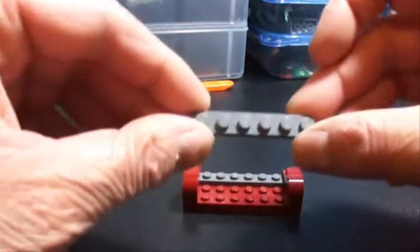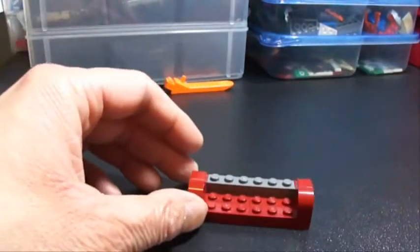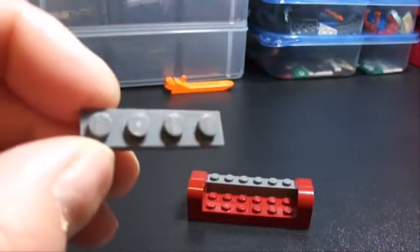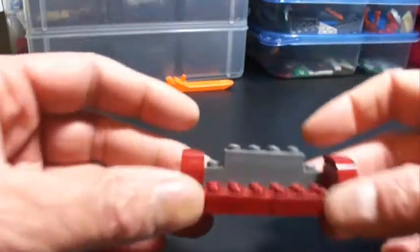Then we're going to take another 1x6 and stack it like so. We're going to take two of our 1x4s, stack those, and set them down right in the middle.